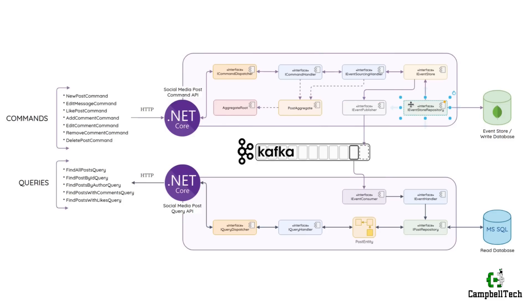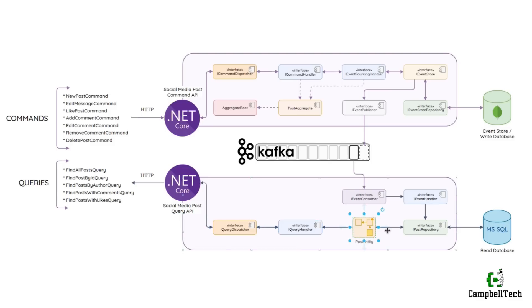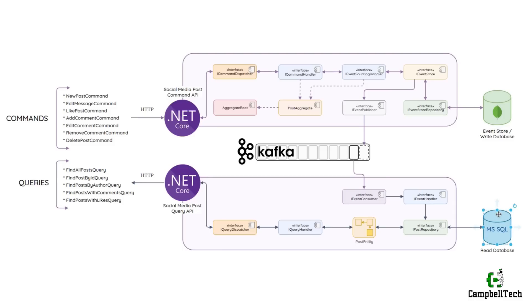These are interfaces and classes that you will create to facilitate the command side of our CQRS and event sourcing architecture. On the social media post query API side, notice that we have an iQueryDispatcher, iQueryHandler, postEntity, iPostRepository, an iEventHandler, and an iEventConsumer. Also notice on the command side that we have a MongoDB event store, also known as a write database, and on the query side we will have a Microsoft SQL Server read database.